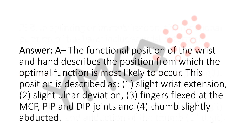Explanation: The functional position of the wrist and hand describes the position from which optimal function is most likely to occur. This position is described as: 1. Slight wrist extension, 2. Slight ulnar deviation, 3. Fingers flexed at the MCP, PIP, and DIP joints, and 4. Thumb slightly abducted.